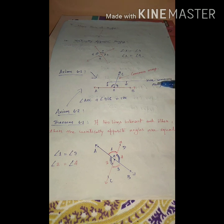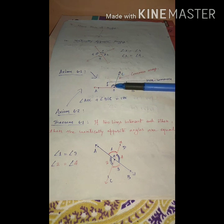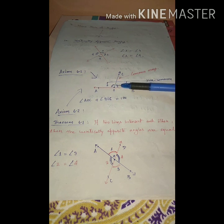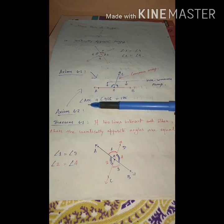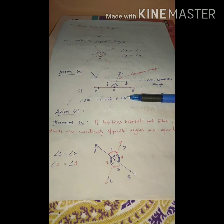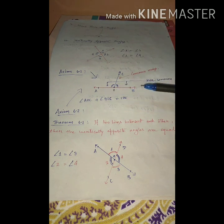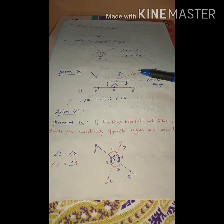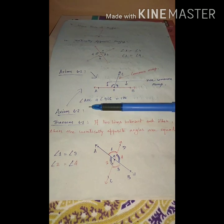With respect to OC, OA and OB are the non-common arms. According to linear pair angles, if a common arm is present, these two angles are known as adjacent angles. The sum of two adjacent angles is 180 degrees. So angle AOC plus angle BOC equals 180 degrees. That is Axiom 6.1: if a common arm is given with respect to a straight line, the sum of the two angles is always 180 degrees.